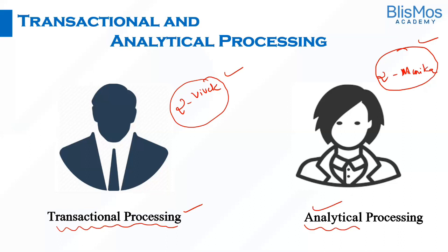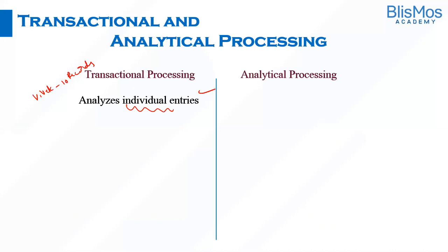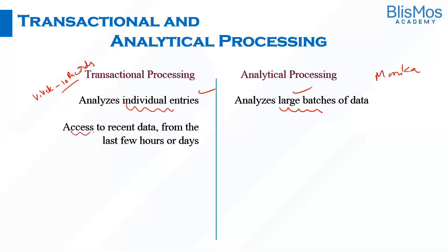Any company today faces both transactional and analytical scenarios, so it's important to understand how transactional processing differs from analytical processing. Transactional processing deals with individual entries — Vivek handled no more than 10 records at a time, updating around 10 database records. Monica, on the other hand, analyzed five years of data, which is characteristic of analytical processing dealing with large batches of data.